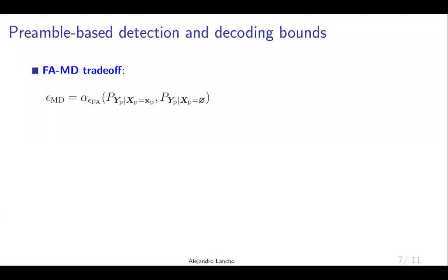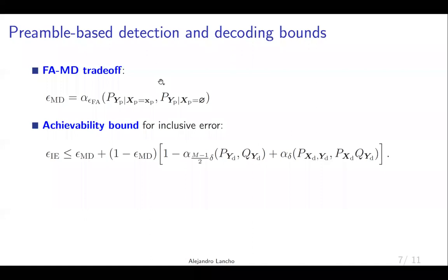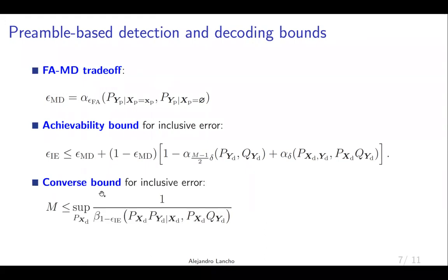The bounds presented in the previous slide can be easily adapted to obtain bounds for preamble-based detection. Since there is a dedicated preamble for detection, this stage is independent of the decoding process in both bounds. Indeed, they only depend on the preamble sequence x_p, and for both bounds the trade-off between false alarms and misdetections is given by the alpha function. For the achievability bound, we obtain an upper bound for inclusive error similar to the one for joint detection, which only depends on x_d and y_d, representing the input and output signals corresponding to the data part. For the converse bound, we simply apply the classical meta-converse bound over the data part of the packet.